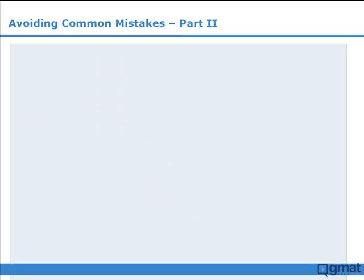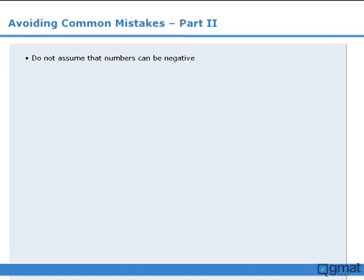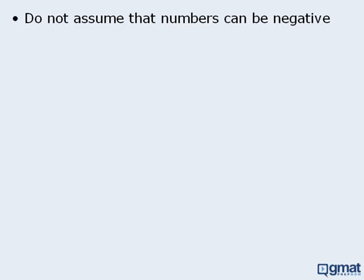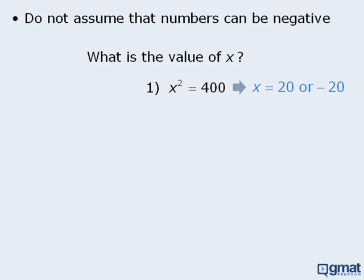Now the next tip is related to the last example. It is: do not assume that numbers can be negative. In this question, we want to find the value of x. Statement 1 tells us that x squared is equal to 400. If we solve this equation for x, we see that x can equal 20 or negative 20, which means the statement is not sufficient.